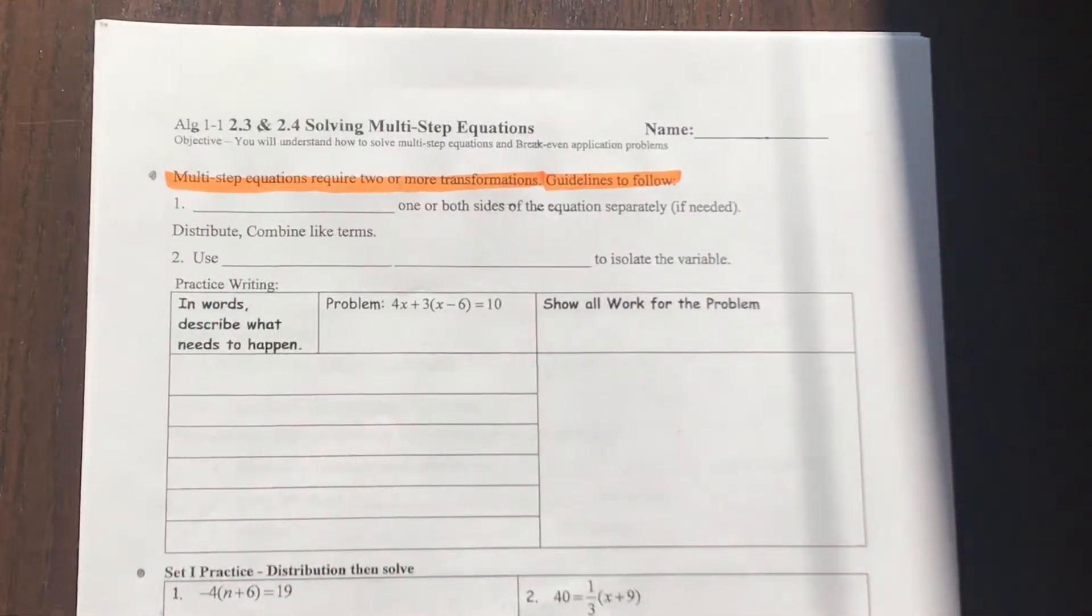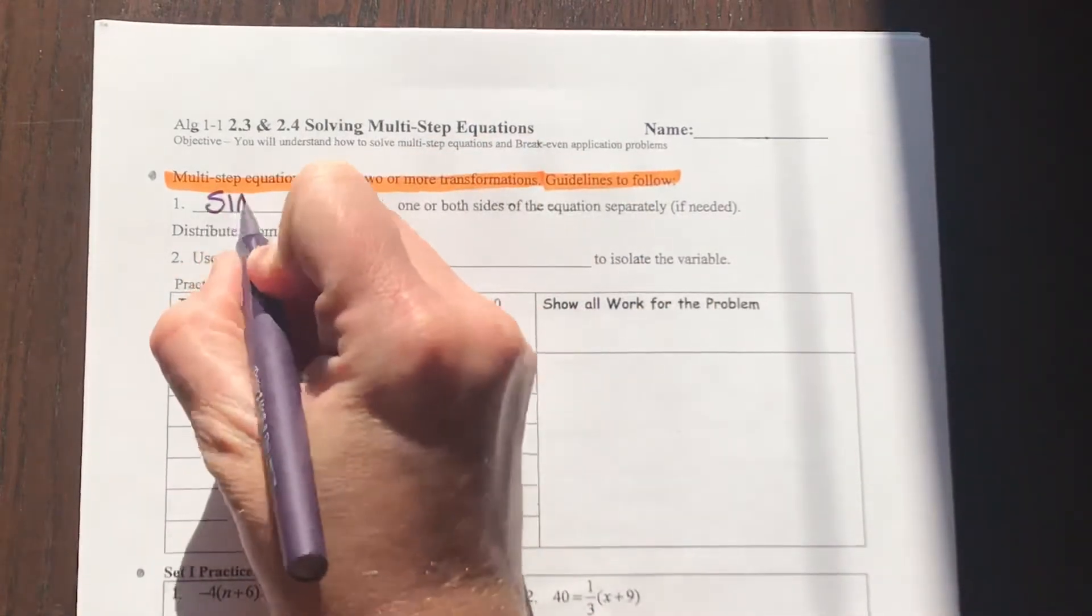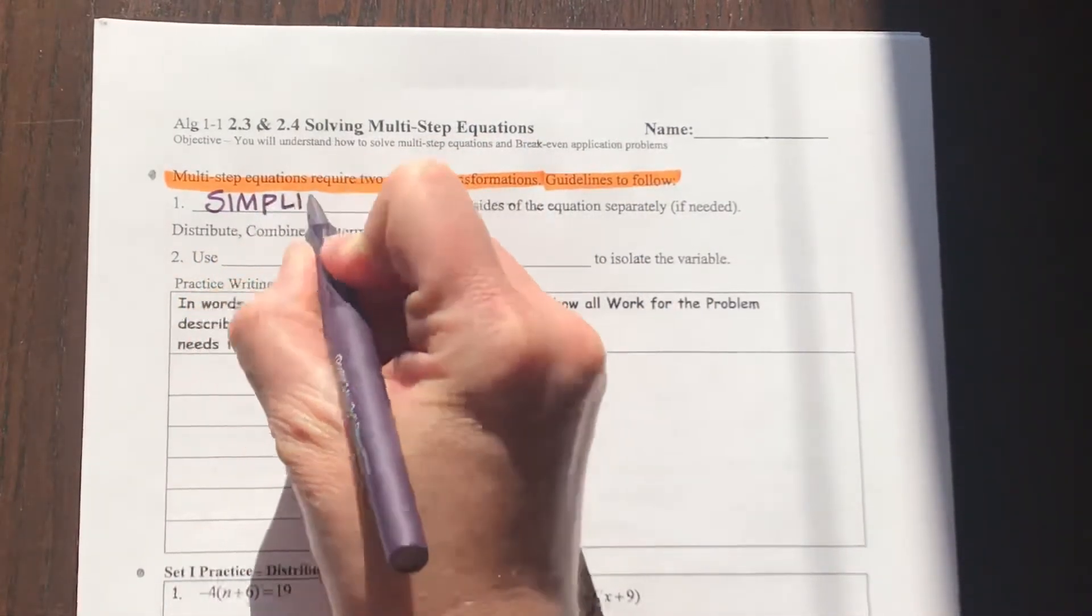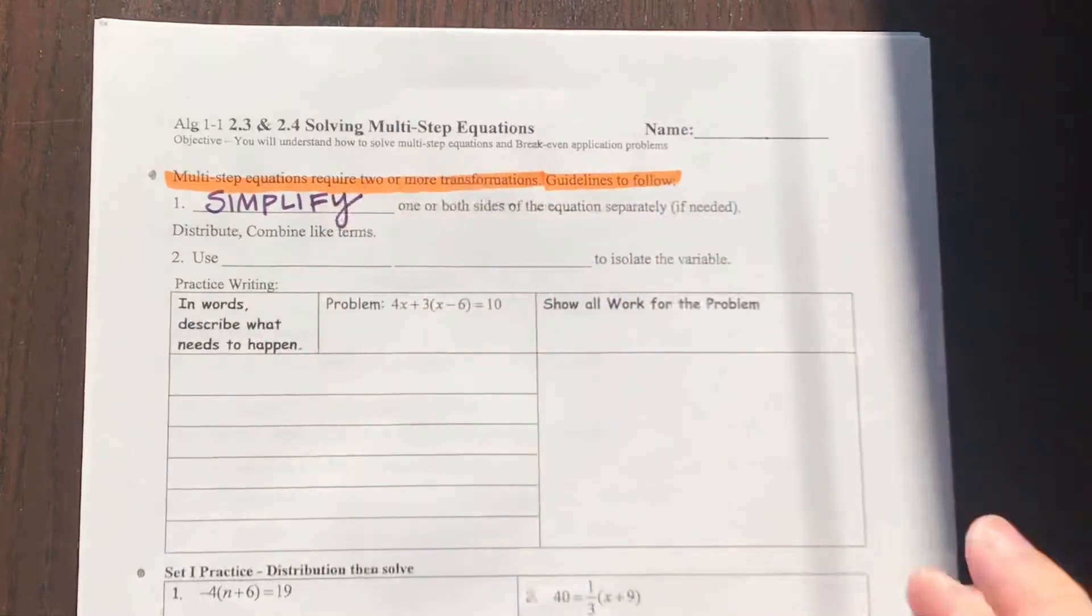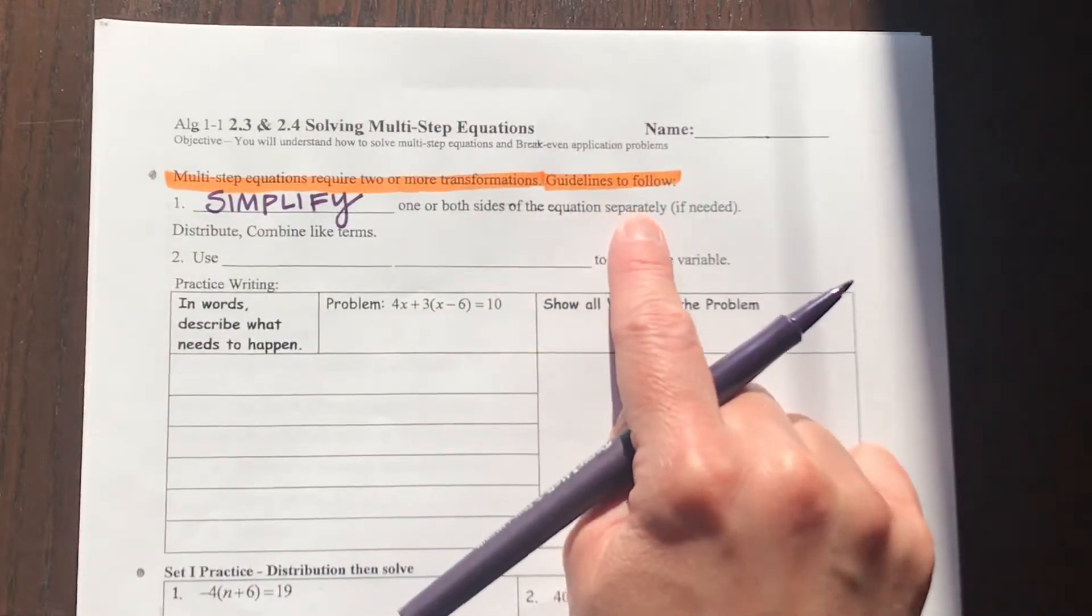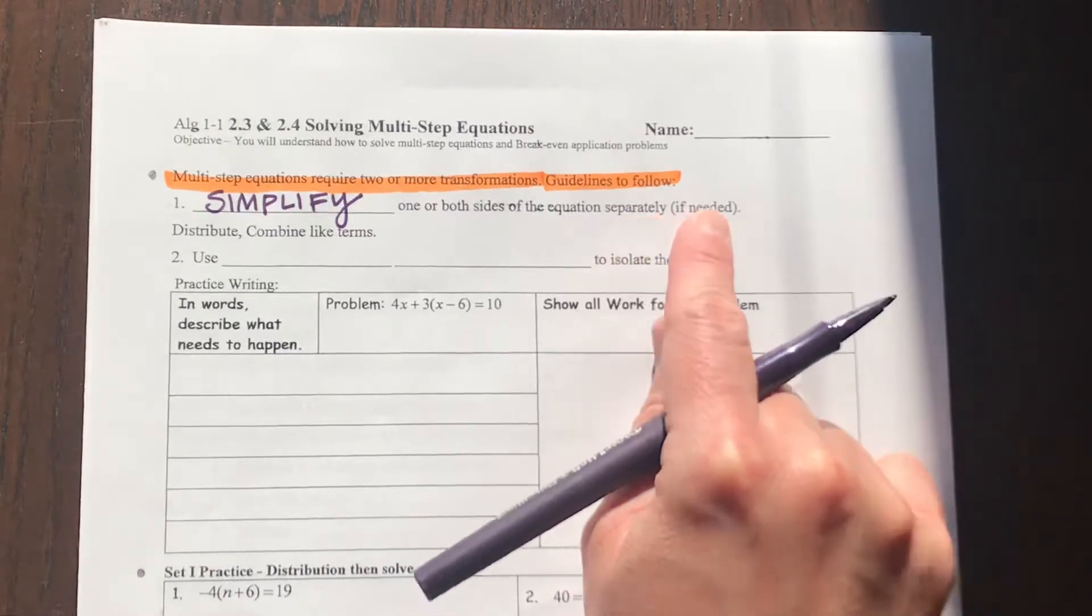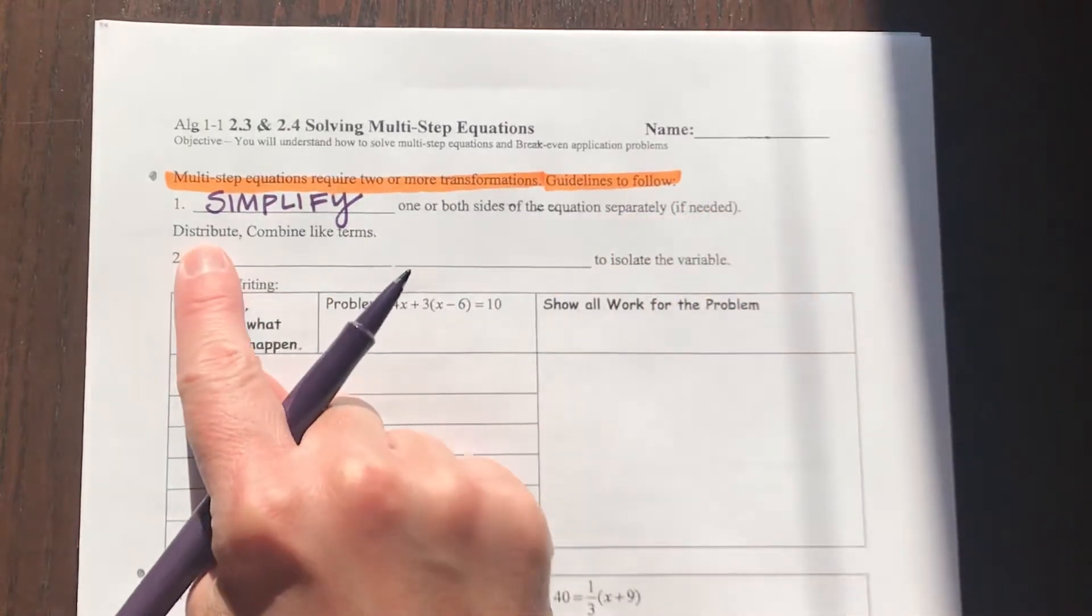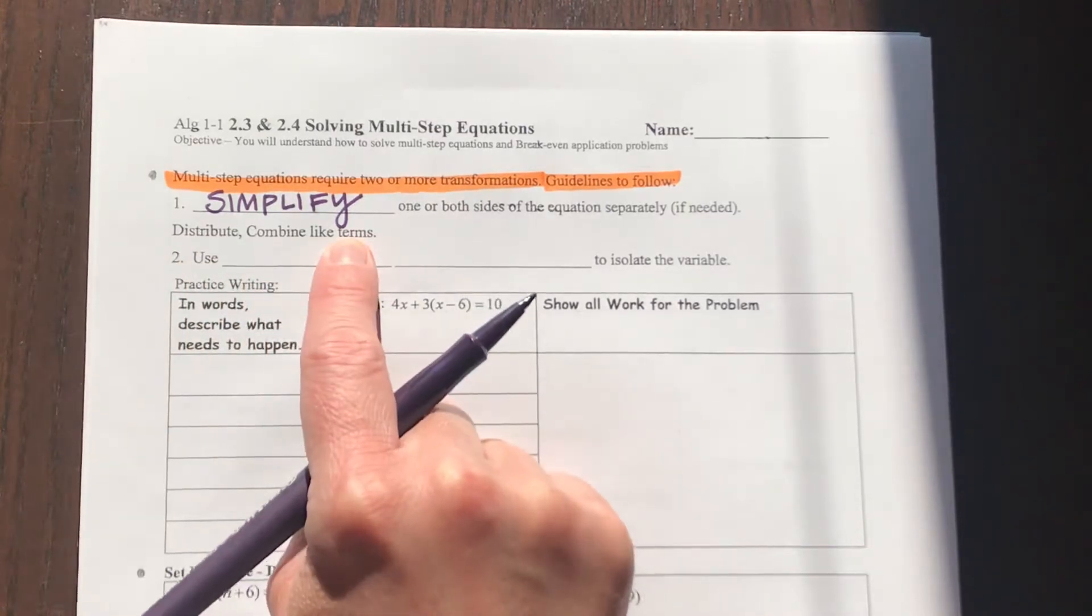First, number one, what you need to do is simplify one or maybe both sides of your equation, sometimes separately if needed. At times, you're going to need to distribute. Sometimes you're going to need to combine like terms.